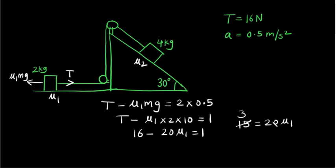Now 3 times 5 is 15 and 4 times 5 is 20. So this will be 3 divided by 4 is equal to mu1. So mu1 then becomes 0.75. So this is our mu1.